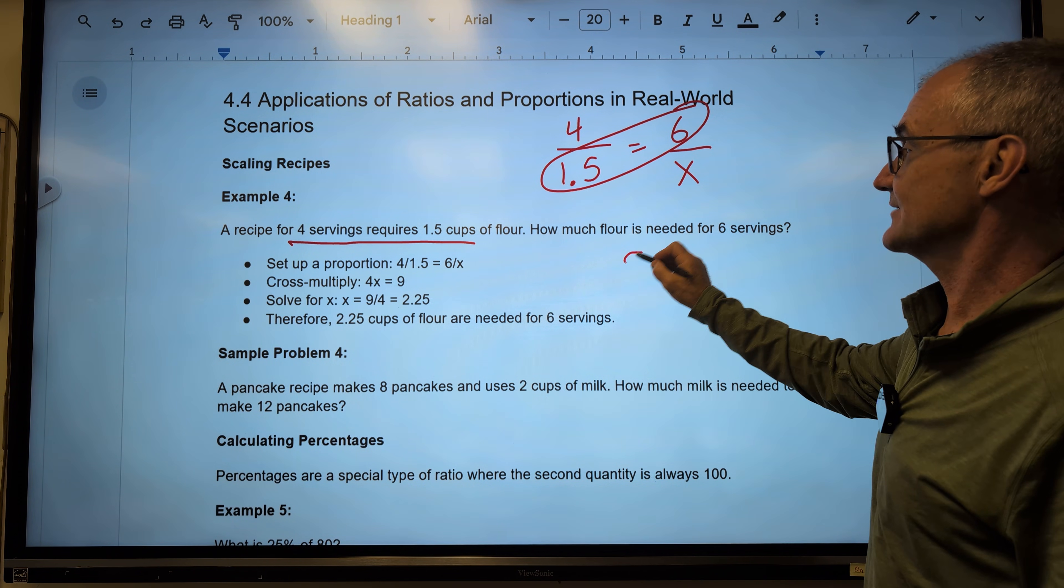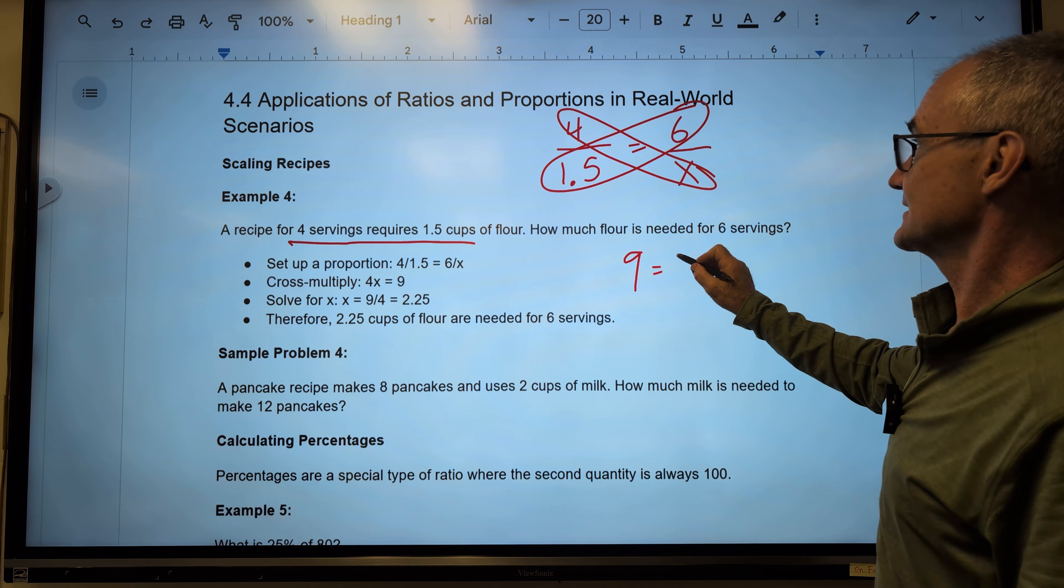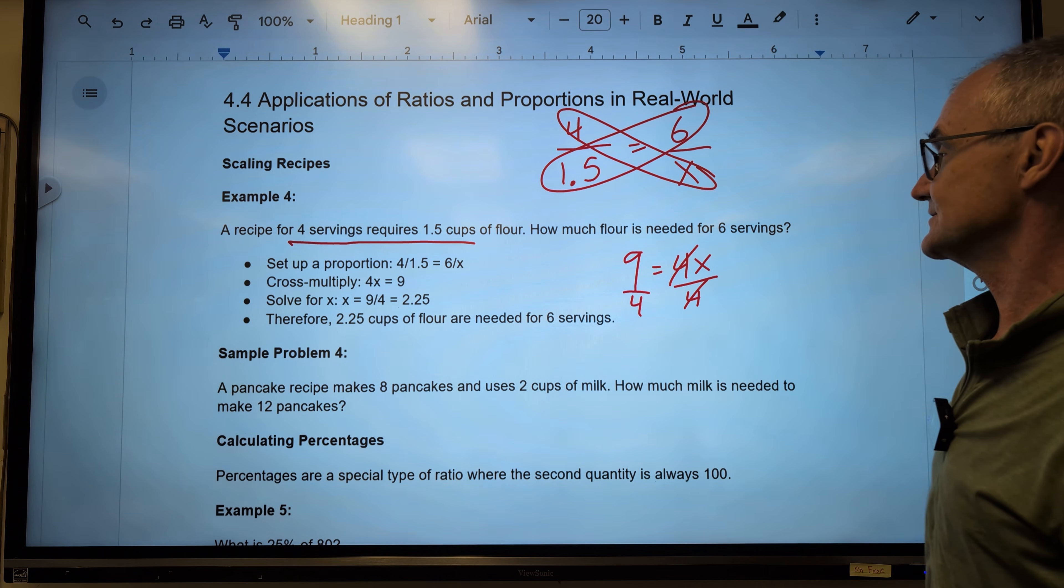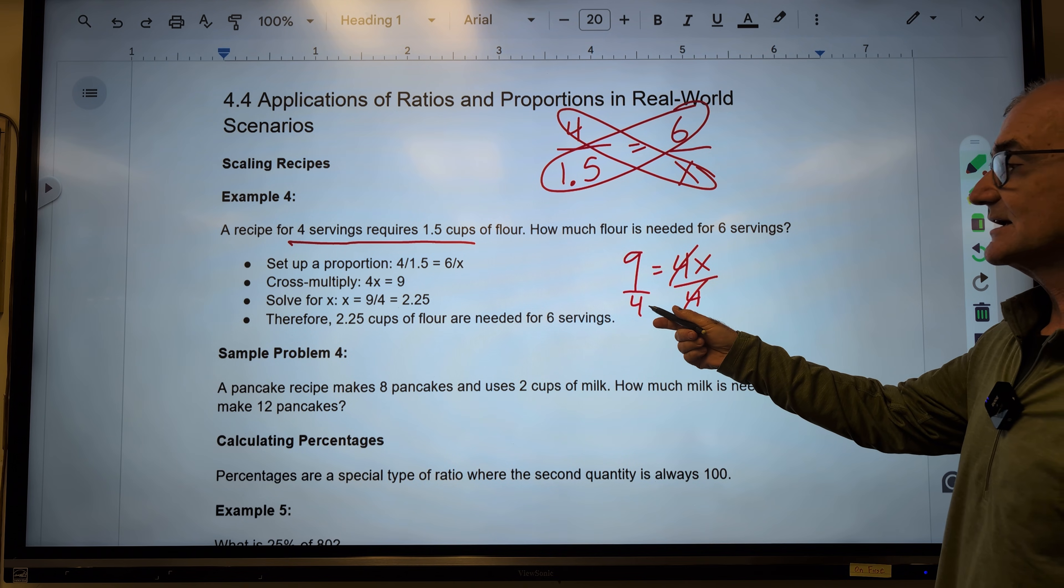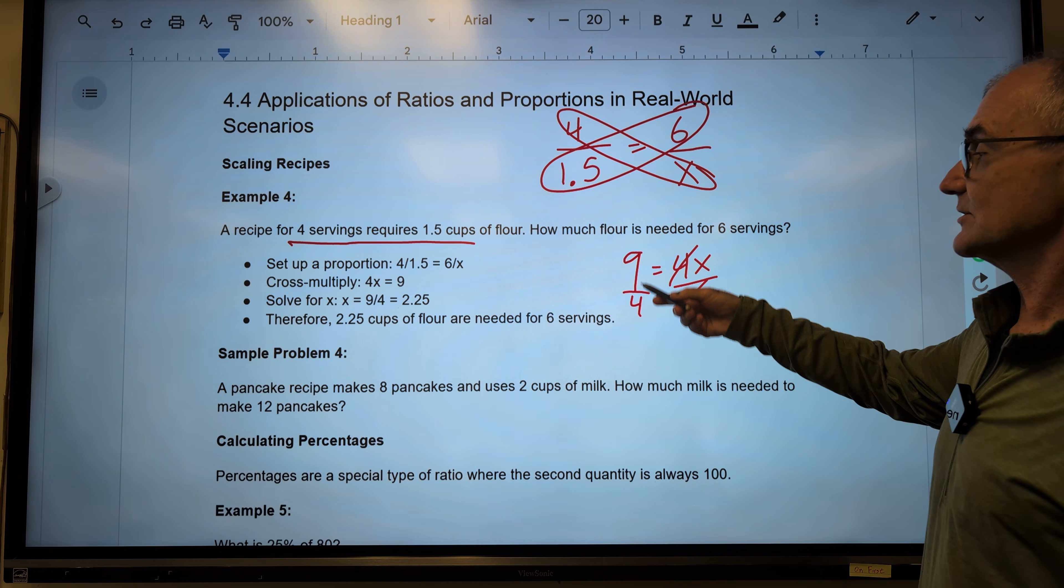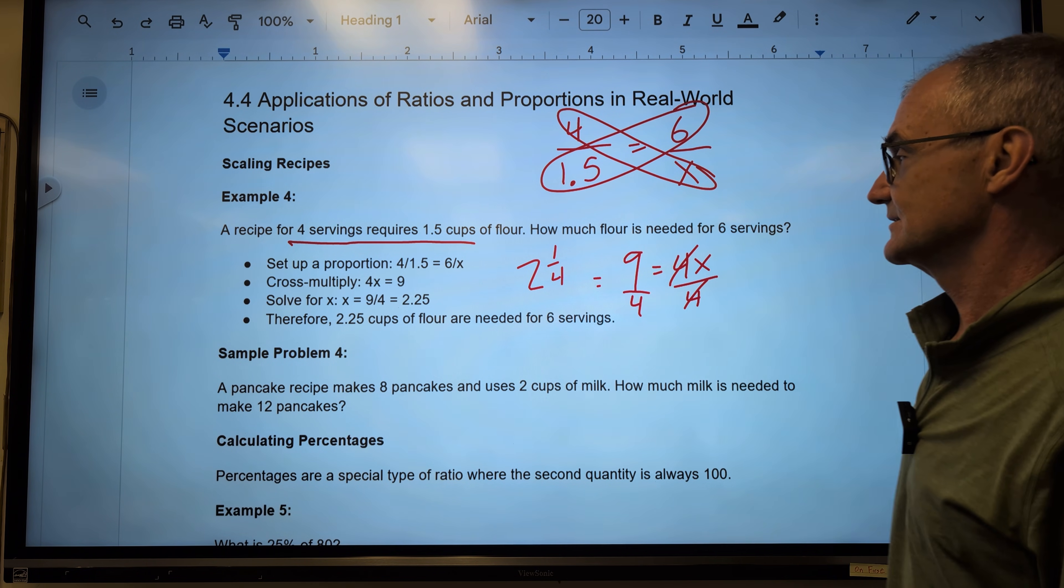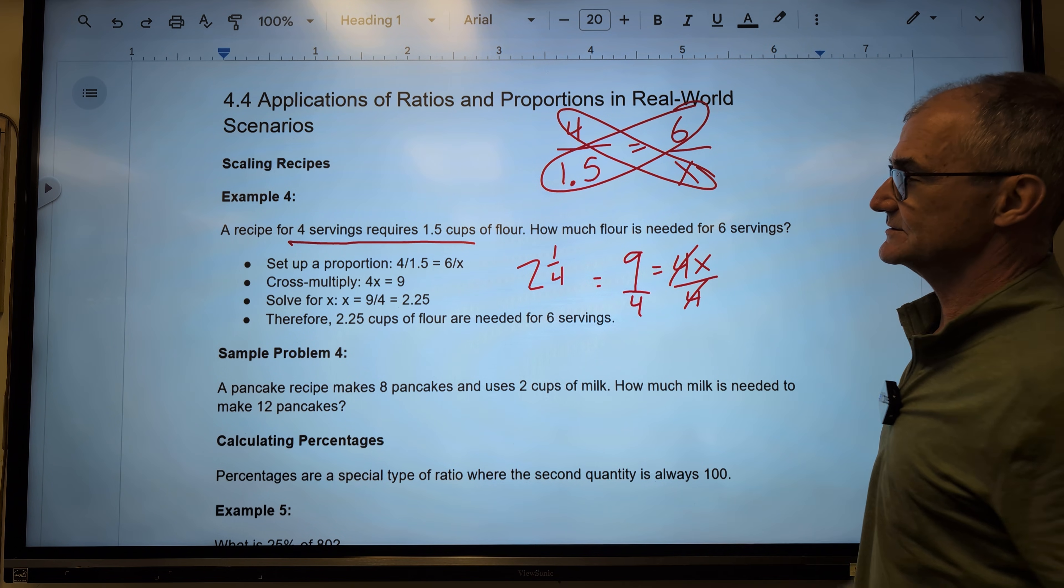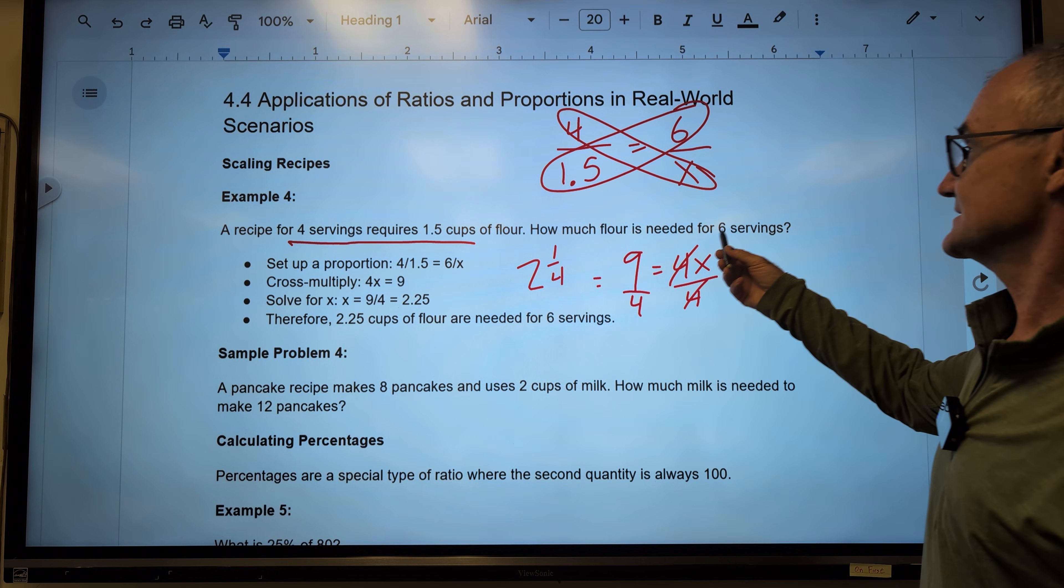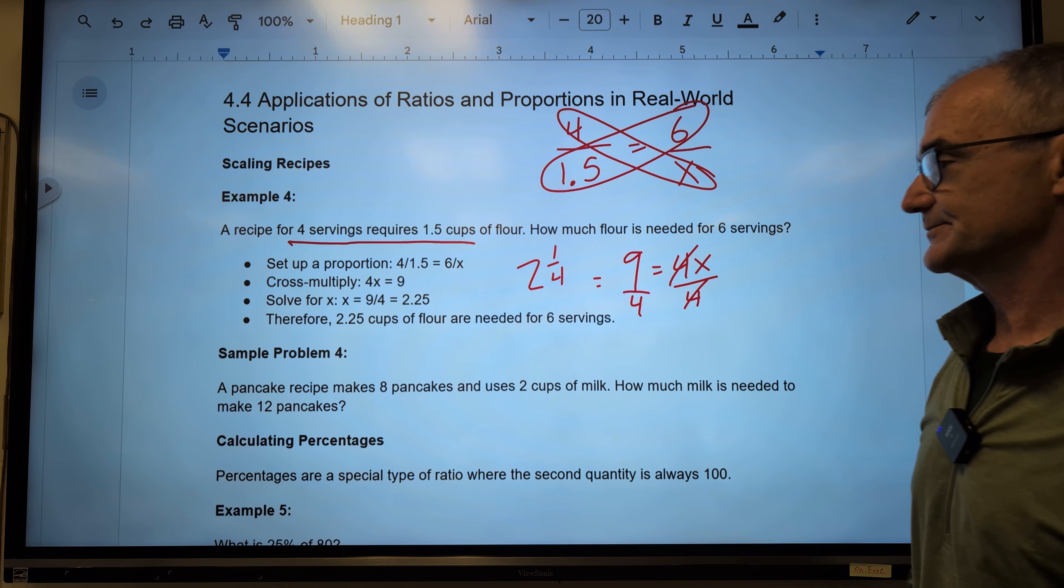6 times 1.5 is 9. 4 times x is 4x. Divide both sides by 4. The 4s cancel. I have x is equal to 9/4. If I want to convert that into a mixed number, 4 goes into 9 two times with 1 left over. So 2 1/4. So let's see if that makes sense. 4 servings for 1.5 cups. How much is 6 servings? Which should be 1.5 times that or 2 1/4.